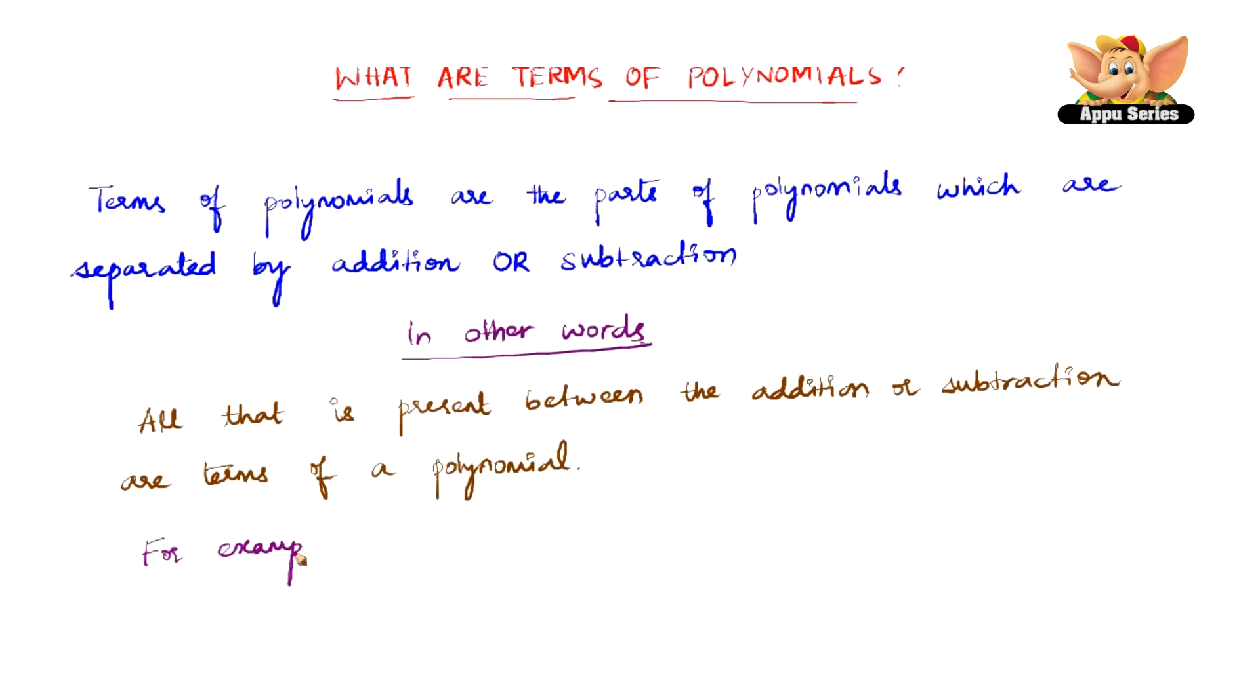For example, 2x² plus 3yz plus 6yz². Now, here if you see, 2x² is one single term, 3yz is one single term, and 6yz² is another single term because they are all separated by addition.